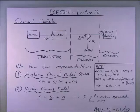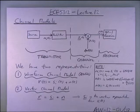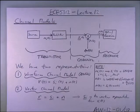This is lecture 12 of ECE 5312. In lecture 11 we looked at Gram-Schmidt orthogonalization, and in lecture 10 we looked at how we can take signaling modulation schemes in terms of waveform space and vectorize them — coming up with a way of representing analog waveforms in terms of vectors.